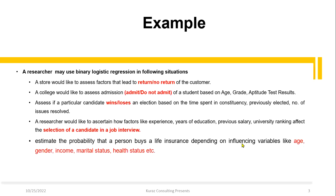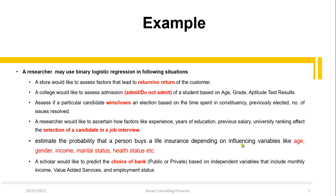You may also be interested in estimating the probability that a person buys life insurance, depending on influencing factors like age, gender, income, marital status, and health status. Or a scholar would like to predict the choice of bank — public or private — based on independent variables that include monthly income, value-added service, and employment status.